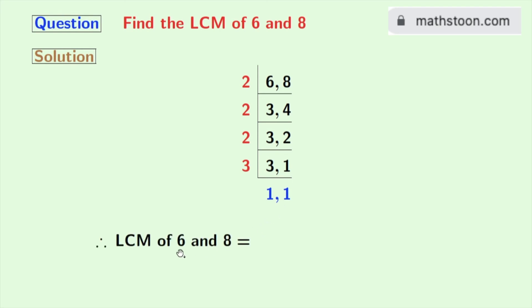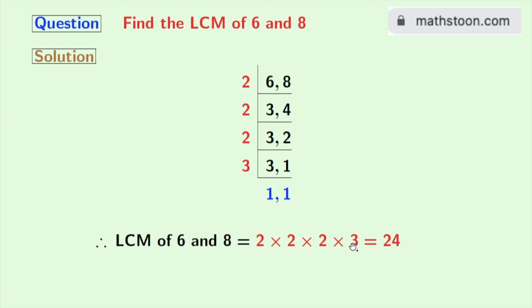Now we have to do the last step to get the LCM of 6 and 8: we multiply the red colored numbers on the left hand side, that is 2 × 2 × 2 × 2 × 3, which equals 24. This is our final answer.